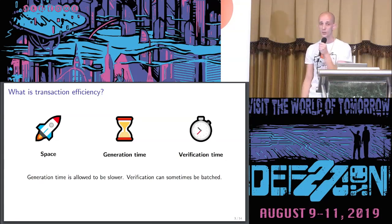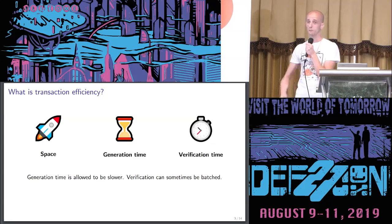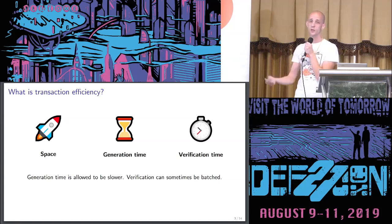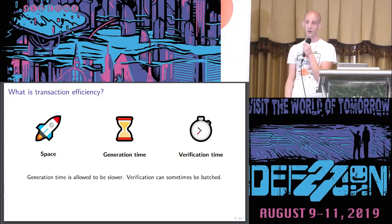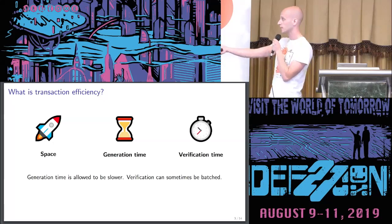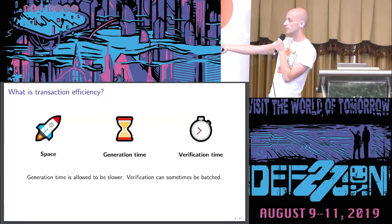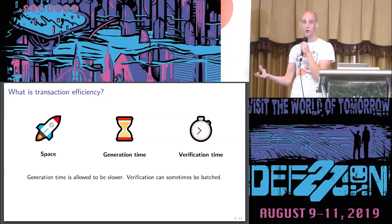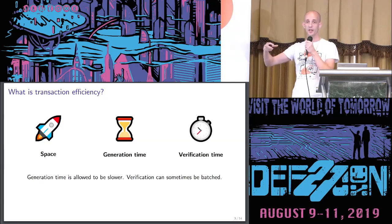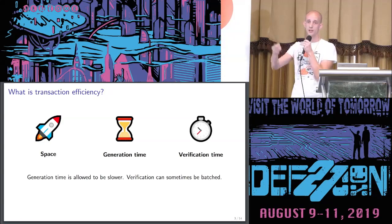Verification time is something we do care a lot about. If you're validating the entire chain of transactions, you need to operate on each individual one. Even if a particular transaction takes 100 milliseconds to verify, if you have to do that 10 million times, that's a long time. However, in some transaction protocols we can do something called batching — the idea is that you can take a bunch of transactions and verify them all at once in a way that's much faster than doing them independently and linearly.